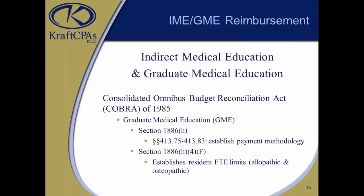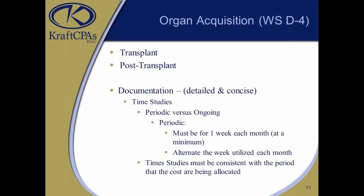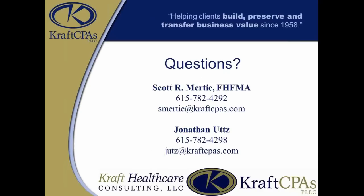Just to add quickly on IME and GME: make sure those FTEs are reported appropriately in those worksheets. Both indirect medical education and graduate medical education directly impact reimbursement, and with those rolling averages — it's a three-year rolling average — something you put in this year will affect next year and the years after. On transplants: it's very important to have proper time studies. There are three areas to look at: pre-transplant, the cost for the transplant itself, and post-transplant.